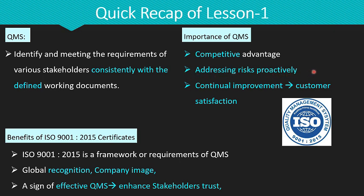QMS enables our organization to be proactive in risk identification — not only identifying the risk but also developing an effective mitigation strategy for the identified problem. Besides that, our organization can achieve continuous improvement in its products or services, which ultimately enhances customer satisfaction. To implement a Quality Management System, we can use ISO 9001:2015, which is an international standard that defines the requirements of a quality management system.